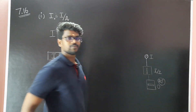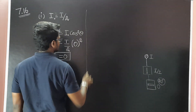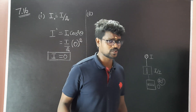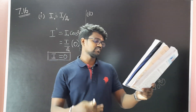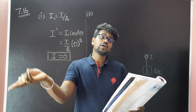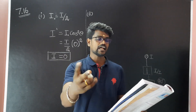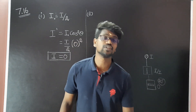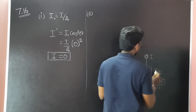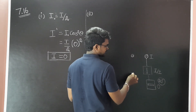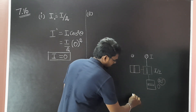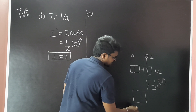This is the previous problem. Now in the second case — what will be the intensity of light coming out from the second Polaroid if a third Polaroid is kept in between at 45 degree inclination to both of them? This is the first case. You have one light source, this is the first Polaroid, and this is the third Polaroid.